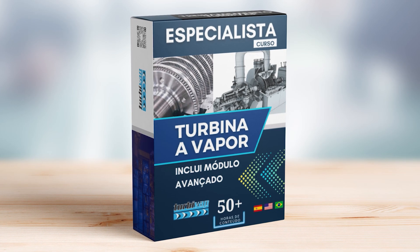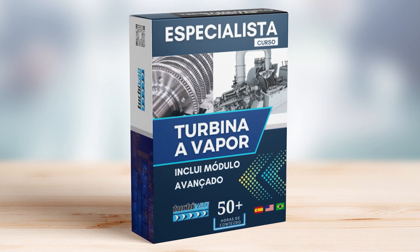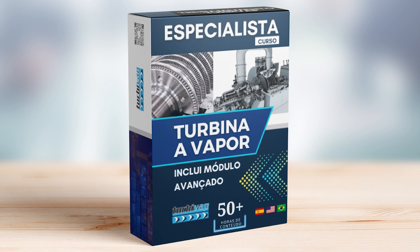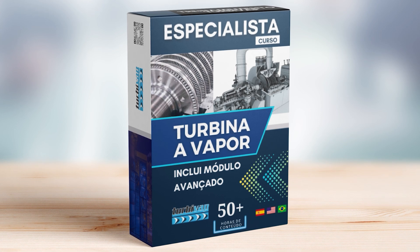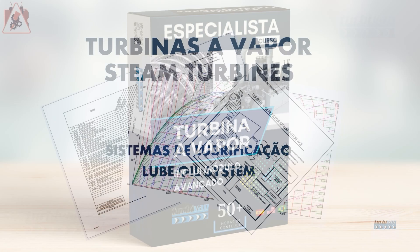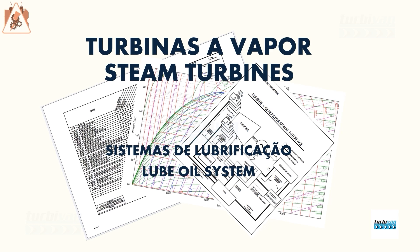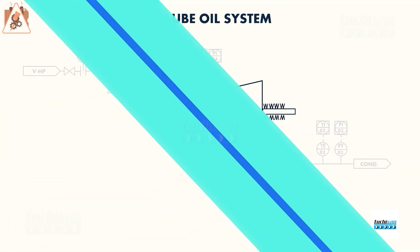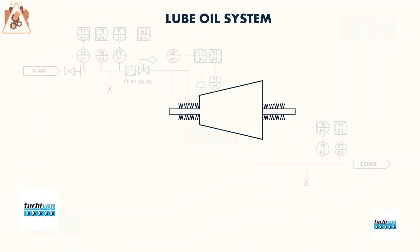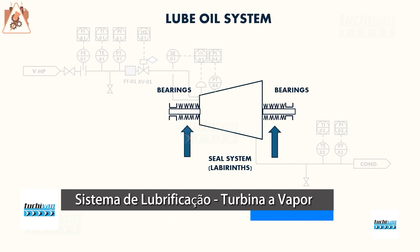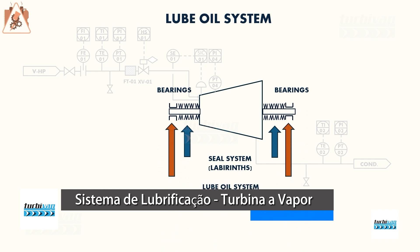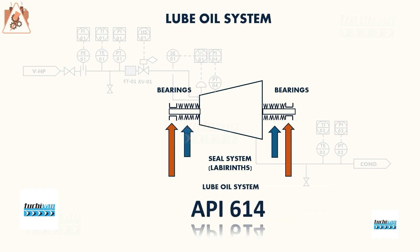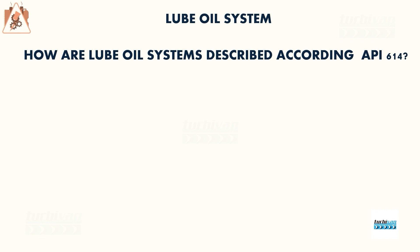Today we are going to talk about the lubrication system and API 614 — the design, construction, and assembly of lubrication systems for steam turbines, engines, and compressors. For a steam turbine, the system needs sealing, and after sealing there are bearing systems where lubrication systems are used to keep the machine running with as little friction as possible. API 614 governs this.